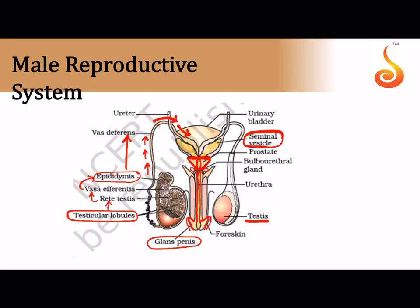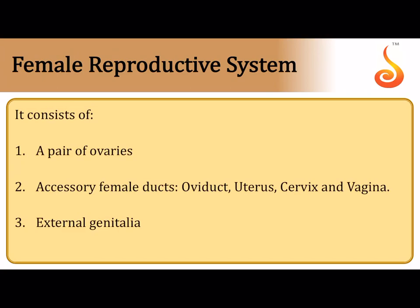The urethra passing through the penis is a common passage for both sperm and urine. In the female reproductive system, a pair of ovaries represents the primary sex organ, just as the testis does in the male. The female accessory ducts include the oviduct, the uterus, the cervix, and the vagina.